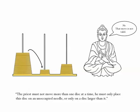The priest can only move a single disc at a time. He can only place this disc on either an unoccupied needle or on a disc larger than it. So this means wherever we see a stack of discs, the discs will always run from the bottom to the top, largest to smallest.